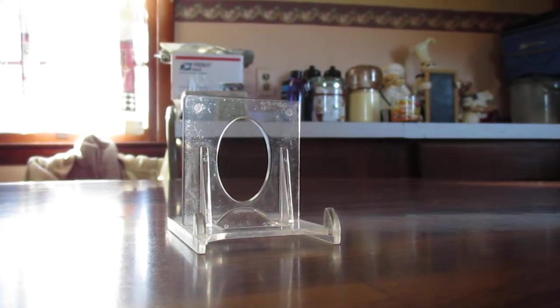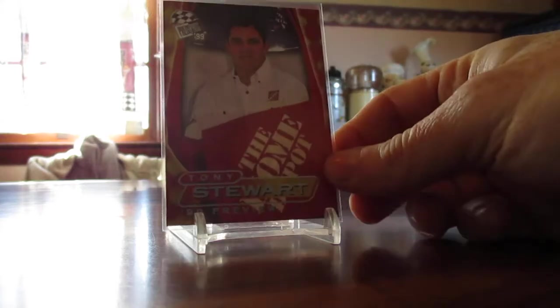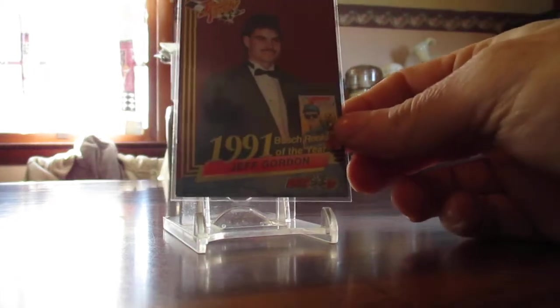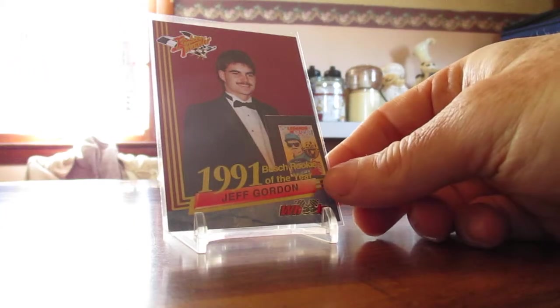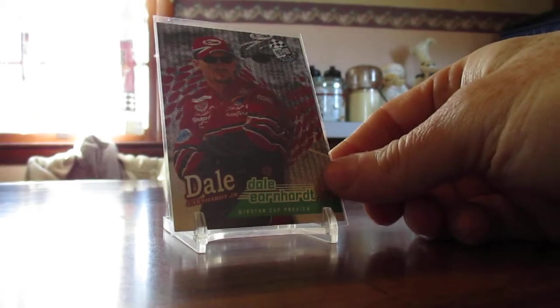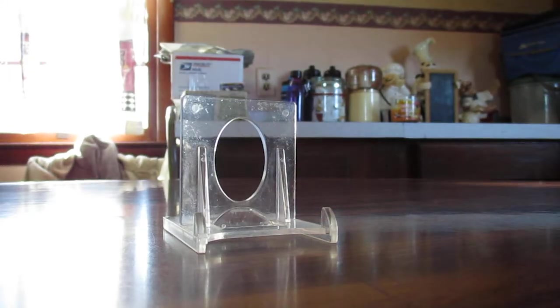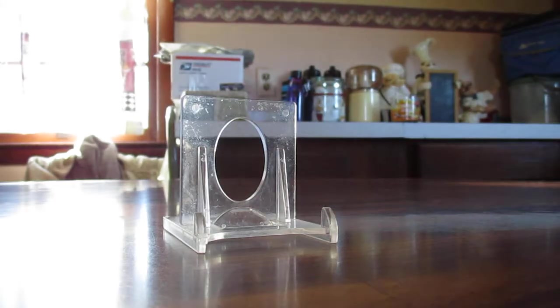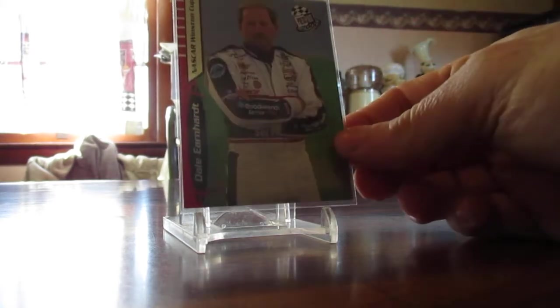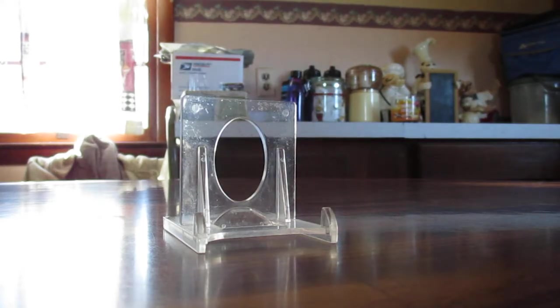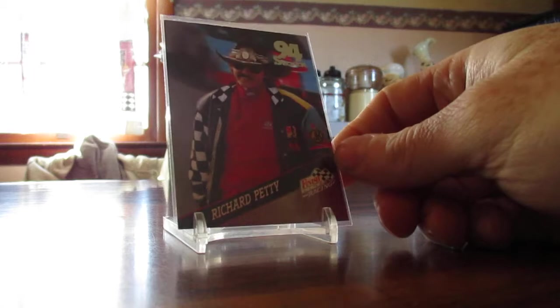Got a Tony Stewart 99 Press Pass. Here's a Jeff Gordon Busch Rookie of the Year card. Dale Jr, Dale Jr from 2000 Press Pass. There's another Dale Jr with a Napa hat. There's a Senior from the same set. Got the king, Richard Petty.